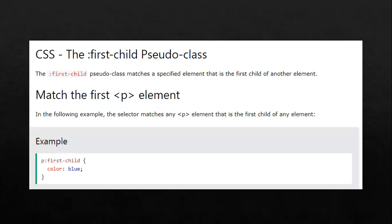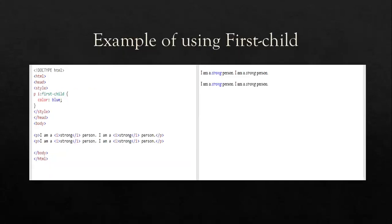For the last pseudo-class, we are going to apply the first-child pseudo-class. When we say first-child pseudo-class, it matches a specified element that is the first child of another element. Based on what we understand, when we say first child, it's the first one. So if you have a lot of the same text and you want to give emphasis only to the first one, we can use first-child. As you can see, we have two strong elements here, but if you want to emphasize only the first strong, then we use first-child.